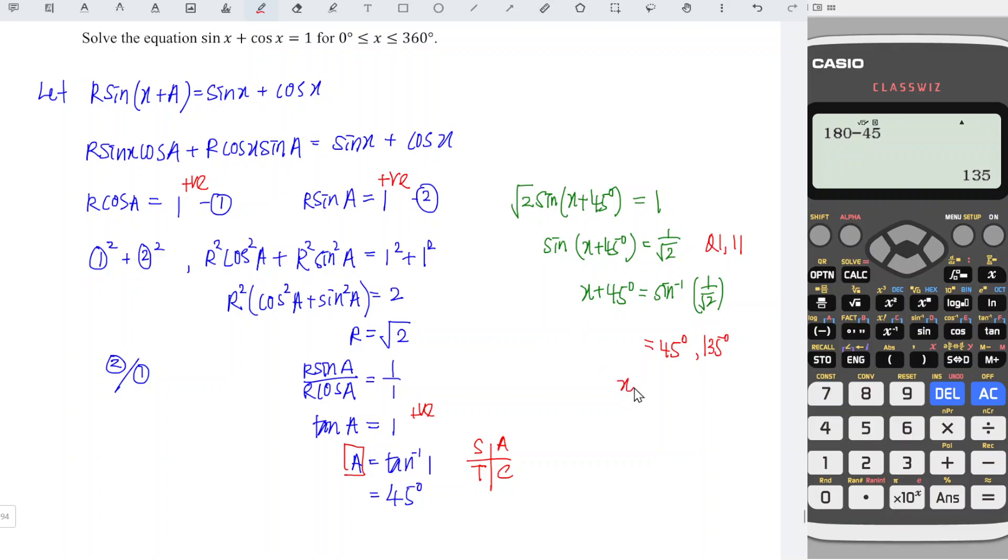Now we can obtain the value of x by subtracting 45 degrees from both angles. We get 0 degrees and 135° - 45° = 90 degrees. Remember, since we have 0 degrees, 0 and 360 degrees are the same point, so we include 360 as well.